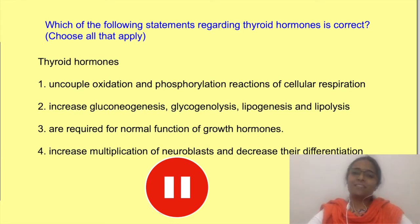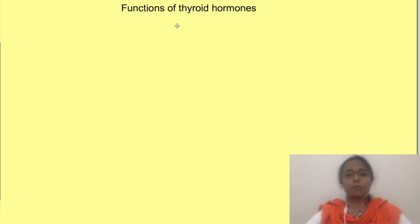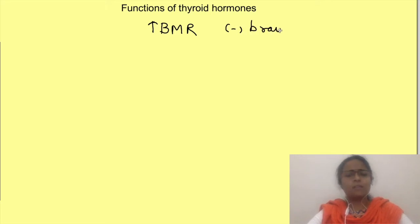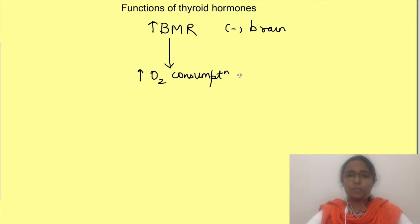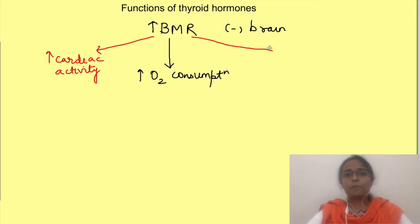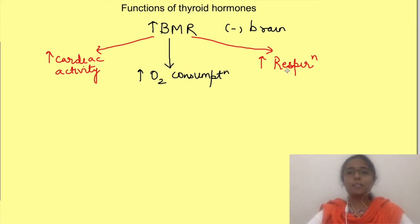Now let's discuss the functions of the thyroid hormones. Thyroid hormones act on virtually every cell in the body. In general, the basic function of thyroid hormones is to increase the metabolic rate, except in the brain and some other tissues. By virtue of increased oxygen consumption, cardiac and respiratory activity increases. Apart from this indirect effect on heart and respiration, thyroid hormones also have a direct effect on many organ systems.